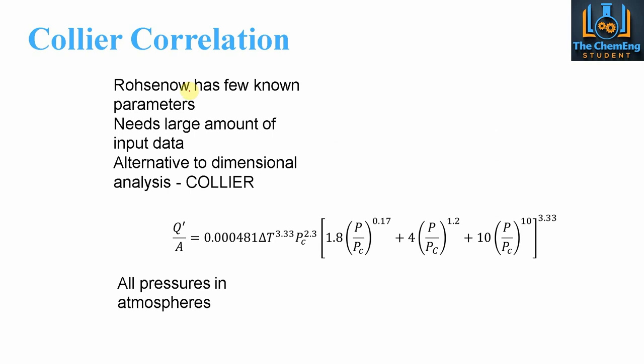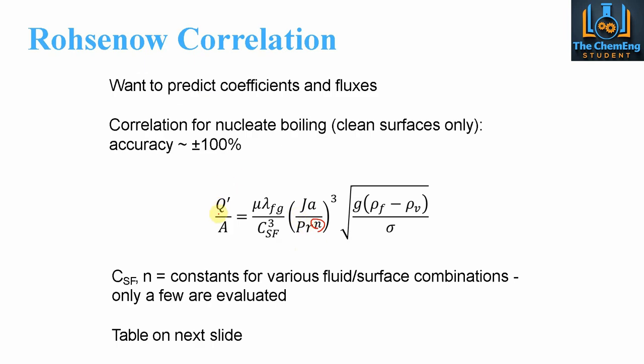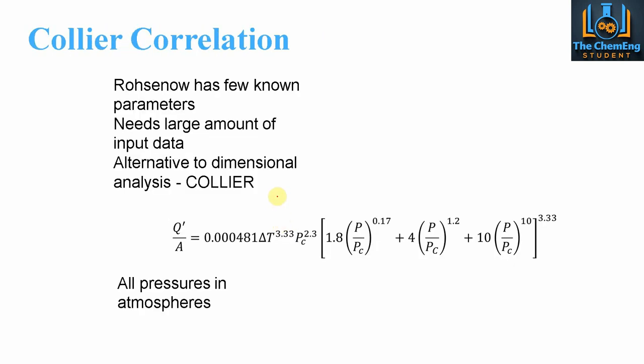Now again, if we were to apply the Rohsenow equation and parameters, then what we could see here is that we would substitute in the values from here into that equation. And we could work out that the critical heat flux can be found using this correlation. Likewise, we can use the dimensional analysis, the Collier equation, which looks at the different pressures within the system. So this has few known parameters and it does need a large amount of input data. So what we can say is if we use this type of system, then we can work out the critical pressures of our system. We can work out the operating pressures and we know our delta T. Now again, the pressures here are in atmospheres. So you just need to be consistent with your units. But that is another way of determining the coefficients using the Collier correlation.